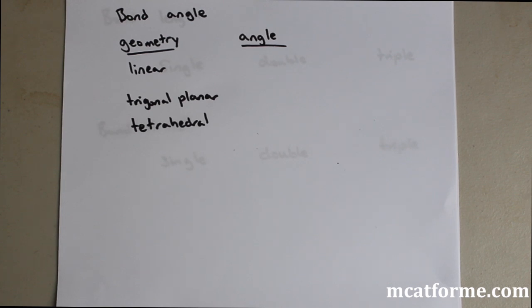So in bond angle we have different geometries. We have more than just three that we have listed here, but these are the three that we'll need to know. So we have linear, trigonal planar, and tetrahedral.